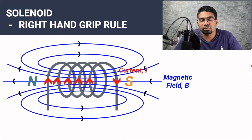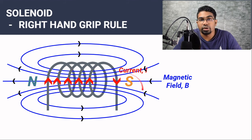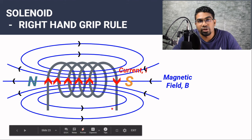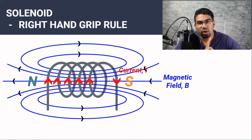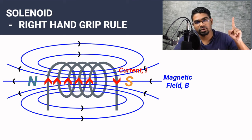How can we increase the strength of the magnetic field formed around the solenoid? Same as before, we can increase the magnitude of the current flowing through the solenoid. We can also increase the number of turns of the coils in the solenoid. For a solenoid, there is one more thing we can do: we can add a soft iron core. I'll explore this more when we talk about electromagnets.